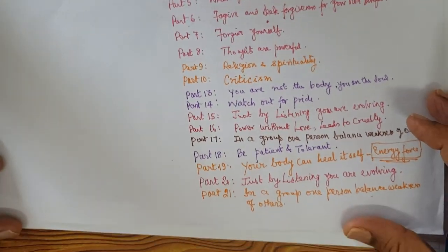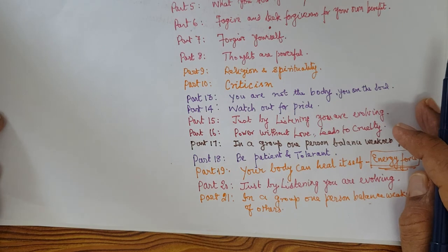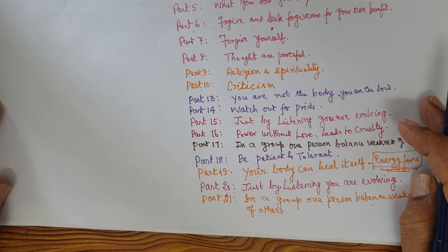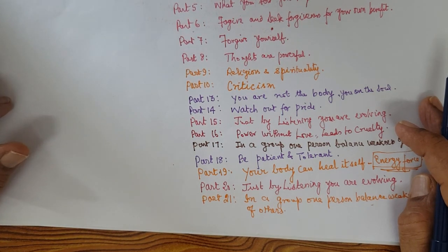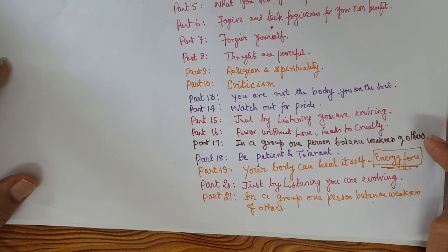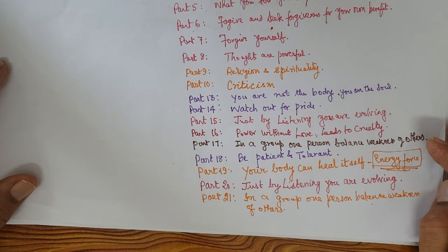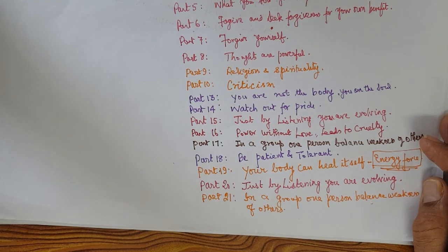Part 21's life lesson: in a group, one person balances the weakness of others. Everybody has strengths and weaknesses, and in teamwork one person's strengths balance another's weaknesses. A group performs better than individuals trying to do everything alone. Thank you for listening today. Goodbye.